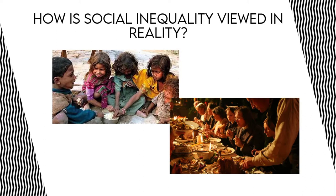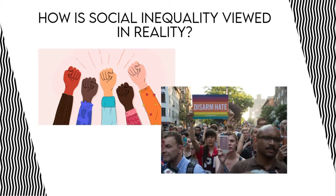It is the differentiation preference of access to social goods in society brought about by power, religion, kinship, prestige, race, ethnicity, gender, age, sexual orientation, and class. Take a look at how social inequality is viewed in our society.